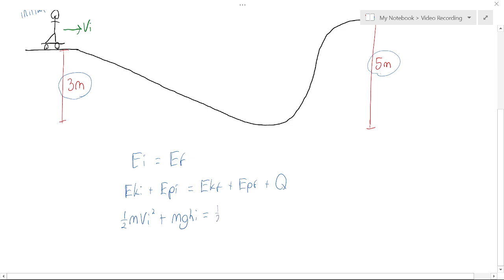Kinetic final is ½m(vf)². Potential final is mghf. And heat is 500, we know, but I'll just leave it as Q for now.